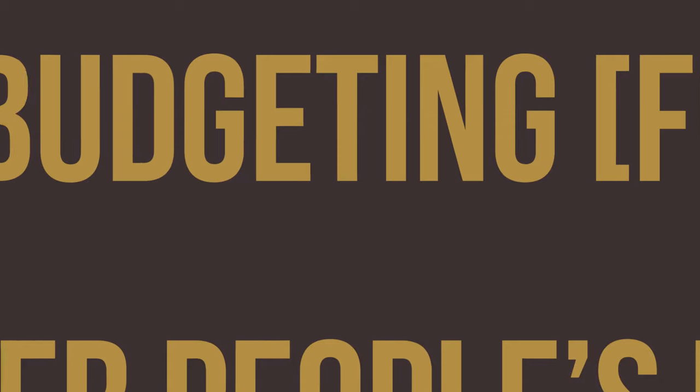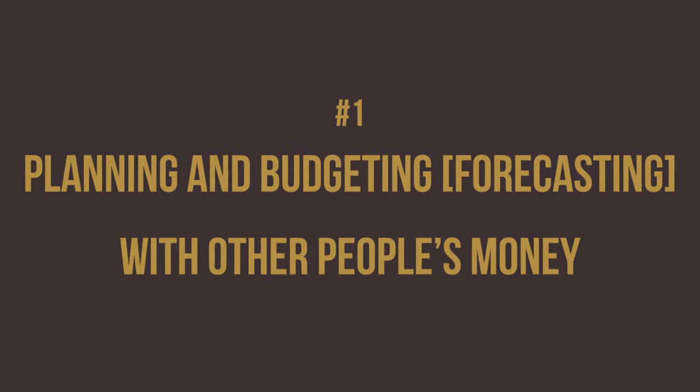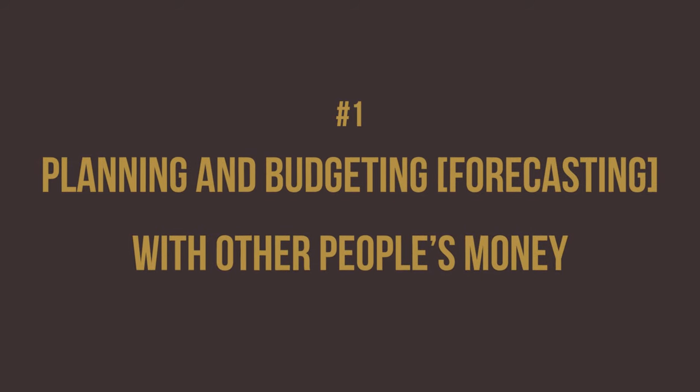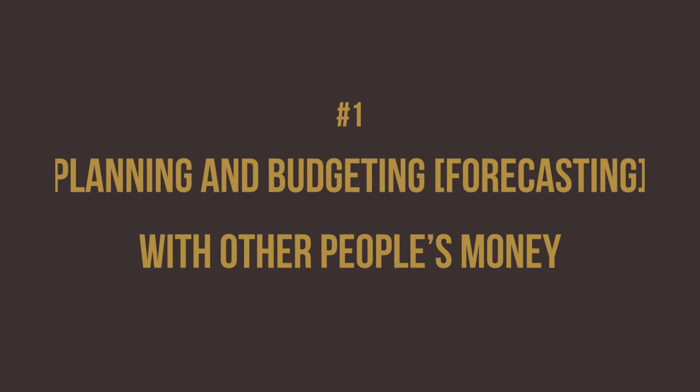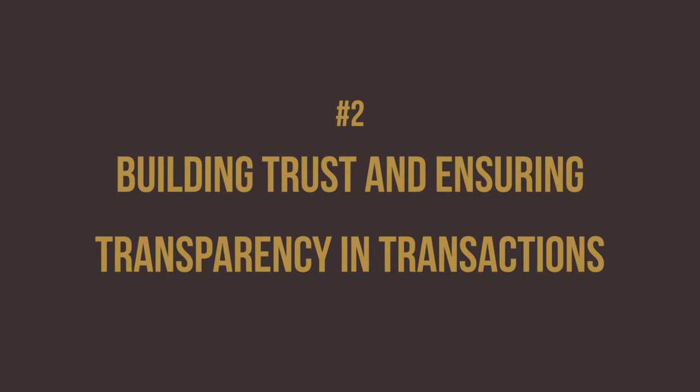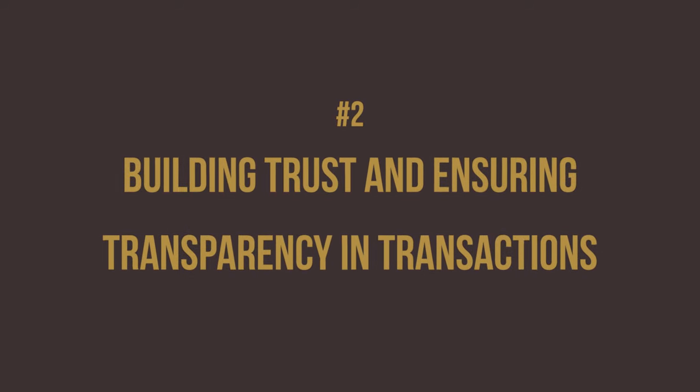The three things you absolutely have to know about spending other people's money: number one is what is the forecast in the planning — like how are you going to use their funds, and you've got to have that in detail. Number two, how do you build the trust and ensure the transparency so they can actually see their funds being used, how it's being used, what it's being used for.